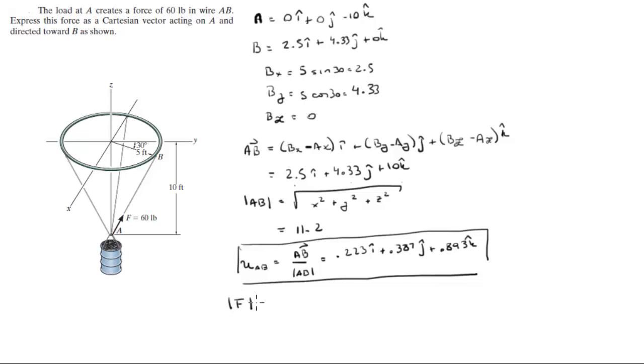You've got that the magnitude of the force given is 60 pounds. So if you want the force in Cartesian vector form, you multiply this magnitude by the unit vector which we just found, which is going to be right here. It has a length of 1.